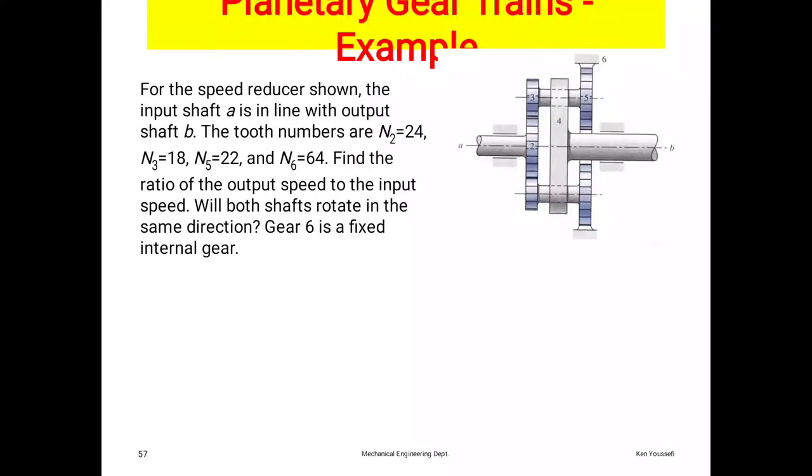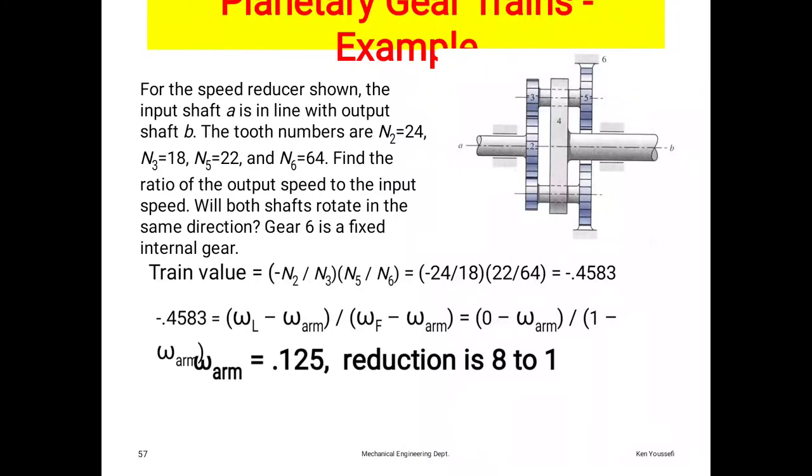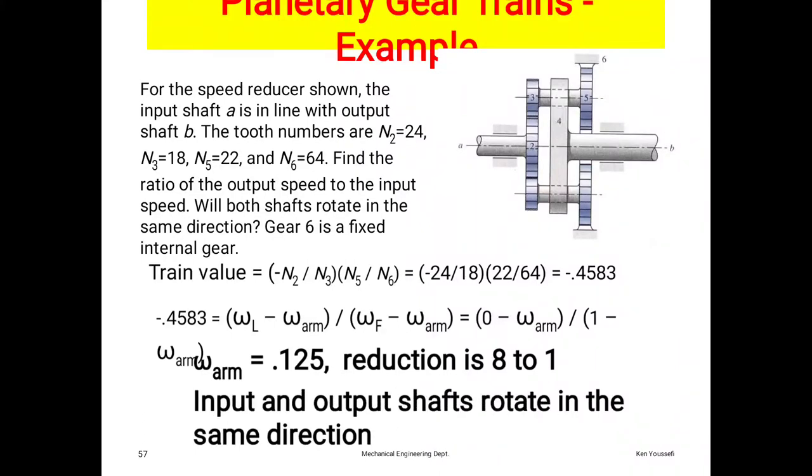Planetary gear trains example: for the speed reducer shown, input shaft A is in line with output shaft B. The tooth numbers are: N2 = 24, N3 = 18, N5 = 22, N6 = 64. Find the ratio of output speed to input speed. Will both shafts rotate in same direction? Gear 6 is fixed internal gear. To solve this problem, train value equals the formula: minus N2 divided by N3 into second bracket N5 divided by N6. Putting these values of number of teeth, we get the final answer minus 0.4583. We convert this equation: omega L minus omega R divided by omega F minus omega R equals 0 minus omega arm divided by 1 minus omega R. Omega R equals 0.125, reduction in 8 to 1. Input and output shafts rotate in the same direction.